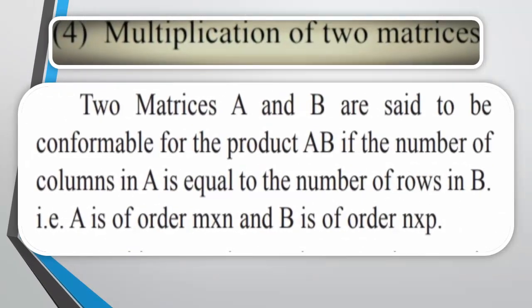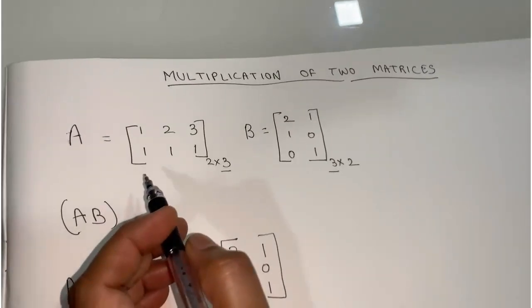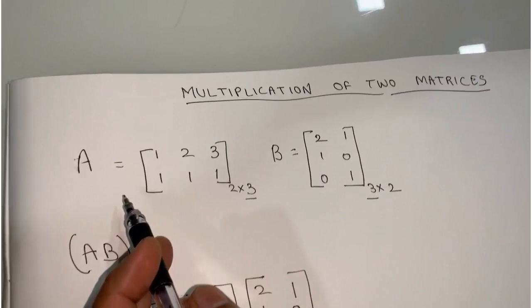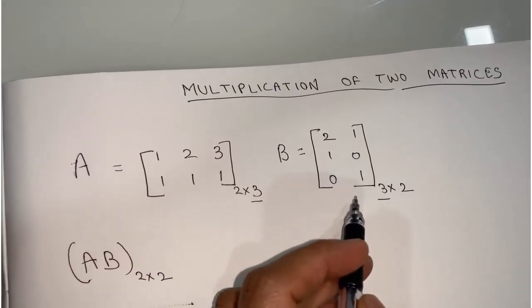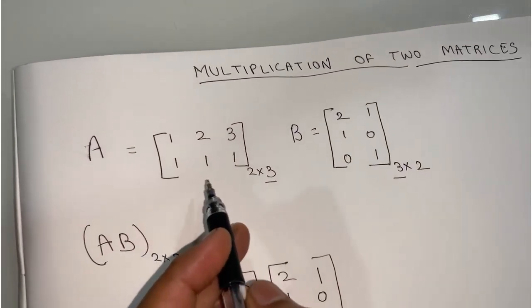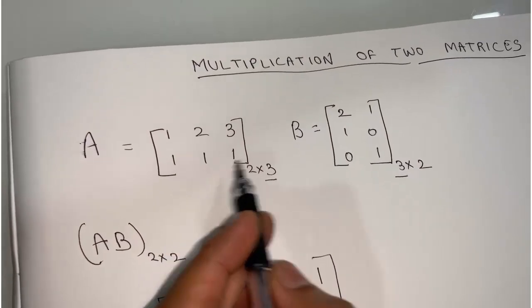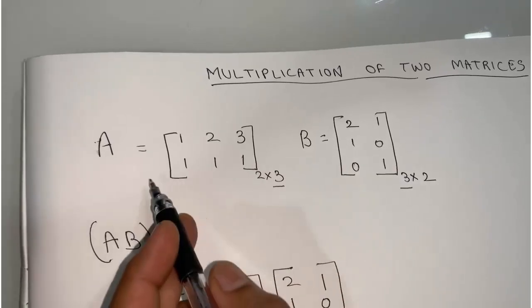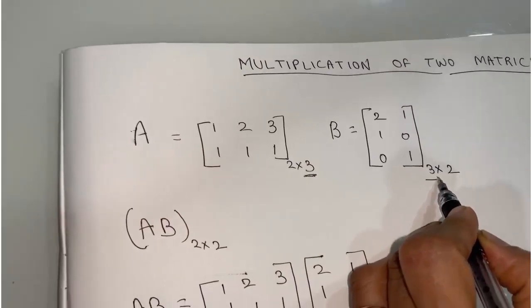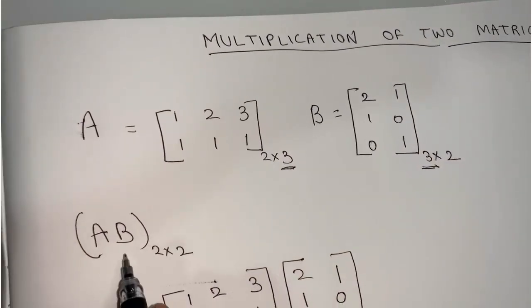Multiplication of two matrices: Two matrices A and B are said to be compatible for the product AB if the number of columns in A equals the number of rows in B. That is, if A is of order M by N, then B should be of order N by P. In this case the product AB is a matrix C of order M by P. For example, matrix A is of order 2 by 3 and matrix B is of order 3 by 2. The number of columns in A is 3 and the number of rows in B is also 3, so multiplication is compatible.